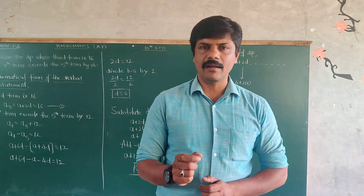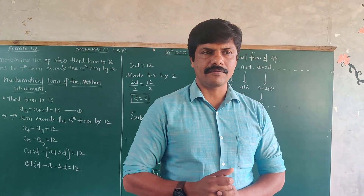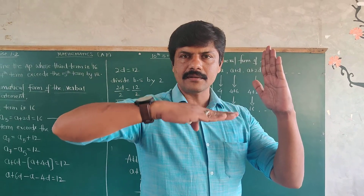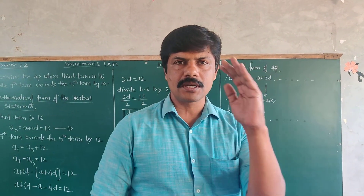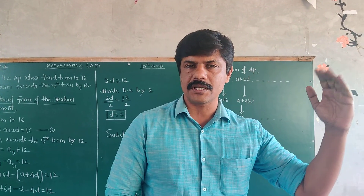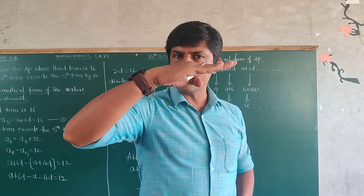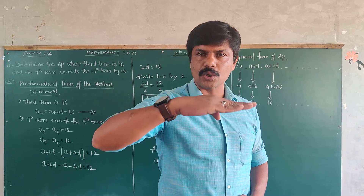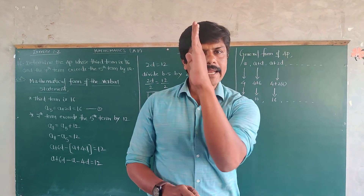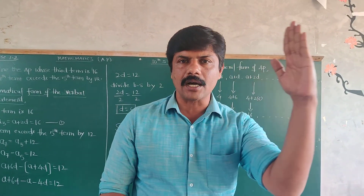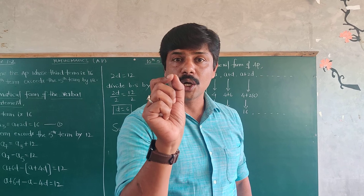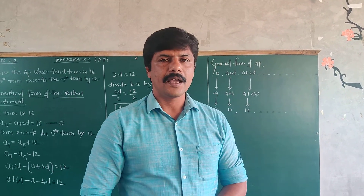The Modern Periodic Table consists of 7 horizontal rows and 18 vertical columns. These 7 horizontal rows are called Periods and the 18 vertical columns are known as Groups.